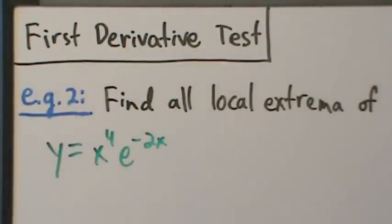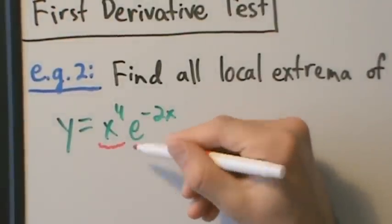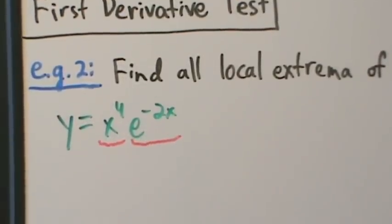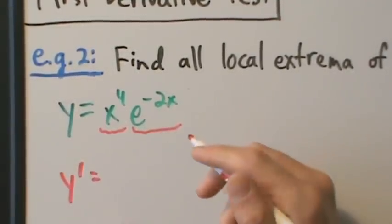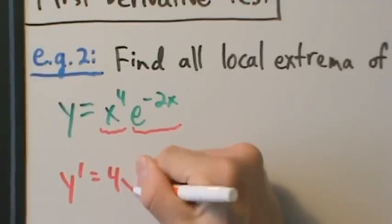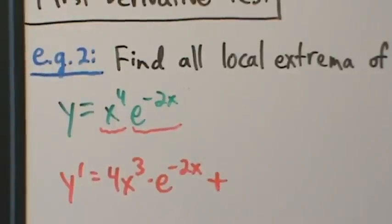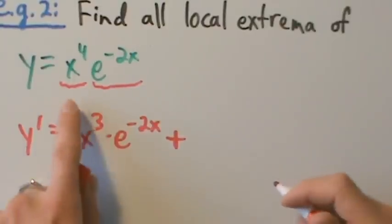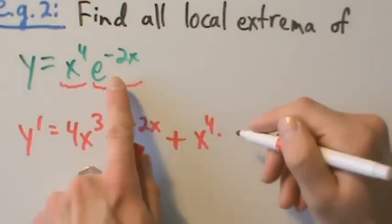Step 1: find all the critical points of the function. We take the derivative and find the points where it is zero or undefined. Since y equals x to the fourth times e to the negative 2x, we need the product rule. Our first function is x to the fourth and the second is e to the negative 2x. So y prime equals the derivative of the first, which is 4x cubed, times the second, e to the negative 2x, plus...